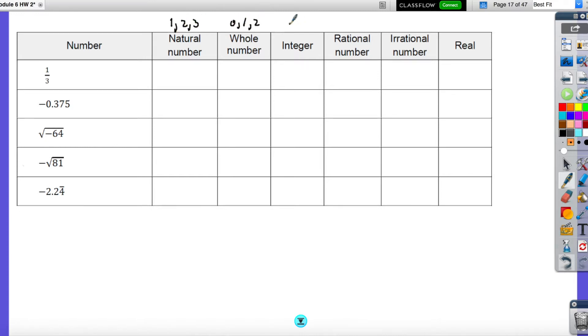This is 0, 1, 2. This is negative 1, 0, 1. Rational numbers is fractions, decimals, and any of these before it. Irrational number is like pi. And a real number is any of those as well.